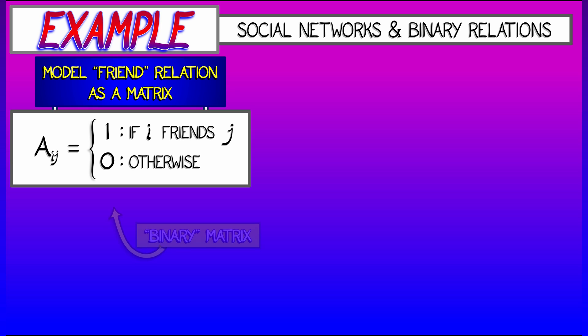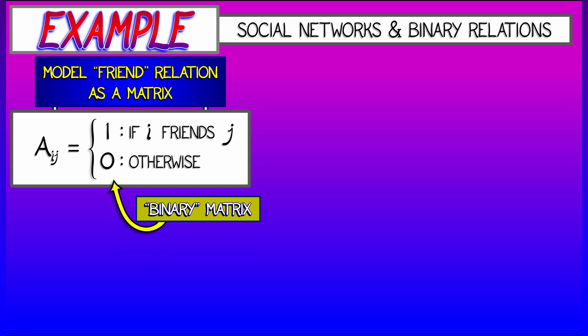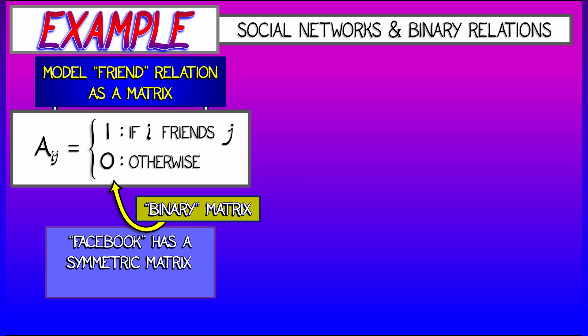This is a very special type of matrix called a binary matrix. All of the entries are either 0s or 1s, and this shows up all over the place. For example, if you're familiar with Facebook, this has a symmetric matrix, meaning that friendship is mutual.